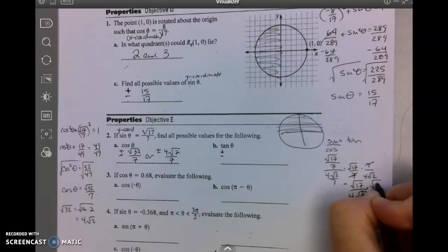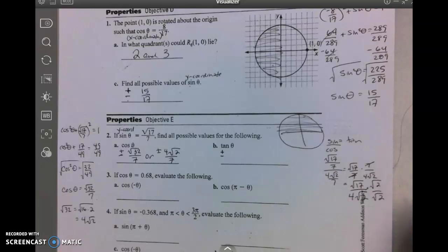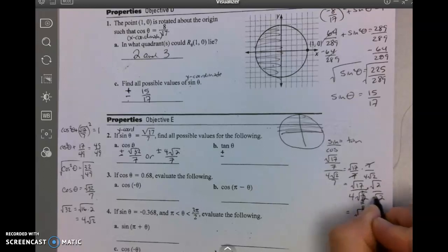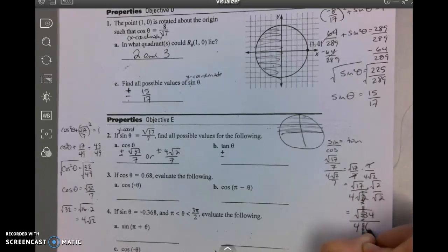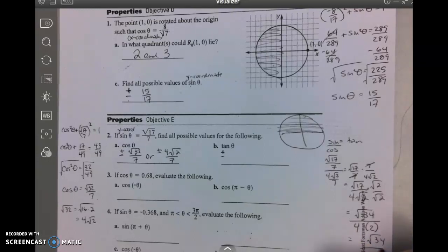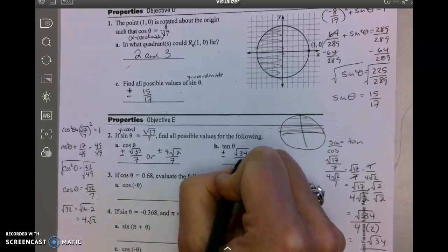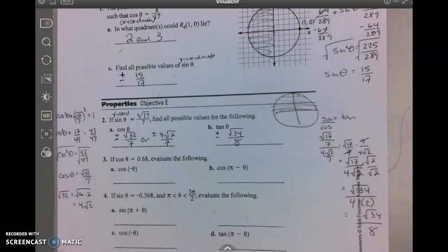Don't like that square root of 2 in the bottom. So I multiply by √2/√2, and I'm left with on top the square root of 34, and square root of 2 times square root of 2 is 2. So I'm left with √34/8.